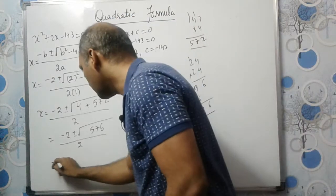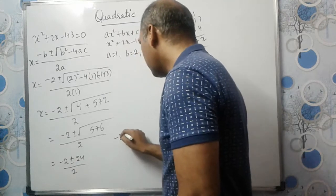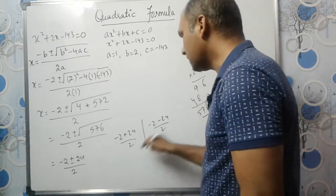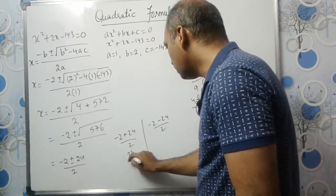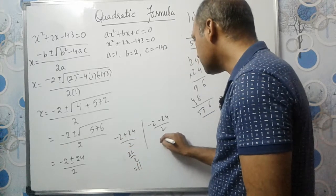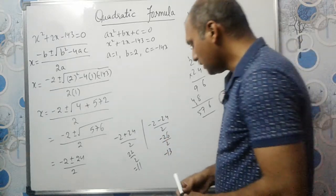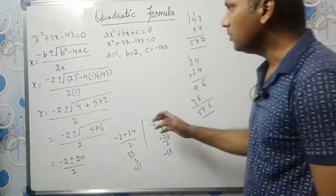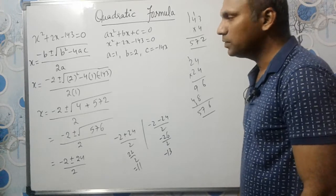So we have minus 2 plus or minus 24 divided by 2. Taking plus: minus 2 plus 24 is 22, divided by 2 gives 11. Taking minus: minus 2 minus 24 is minus 26, divided by 2 gives minus 13. So x equals 11 and x equals minus 13 are the values.